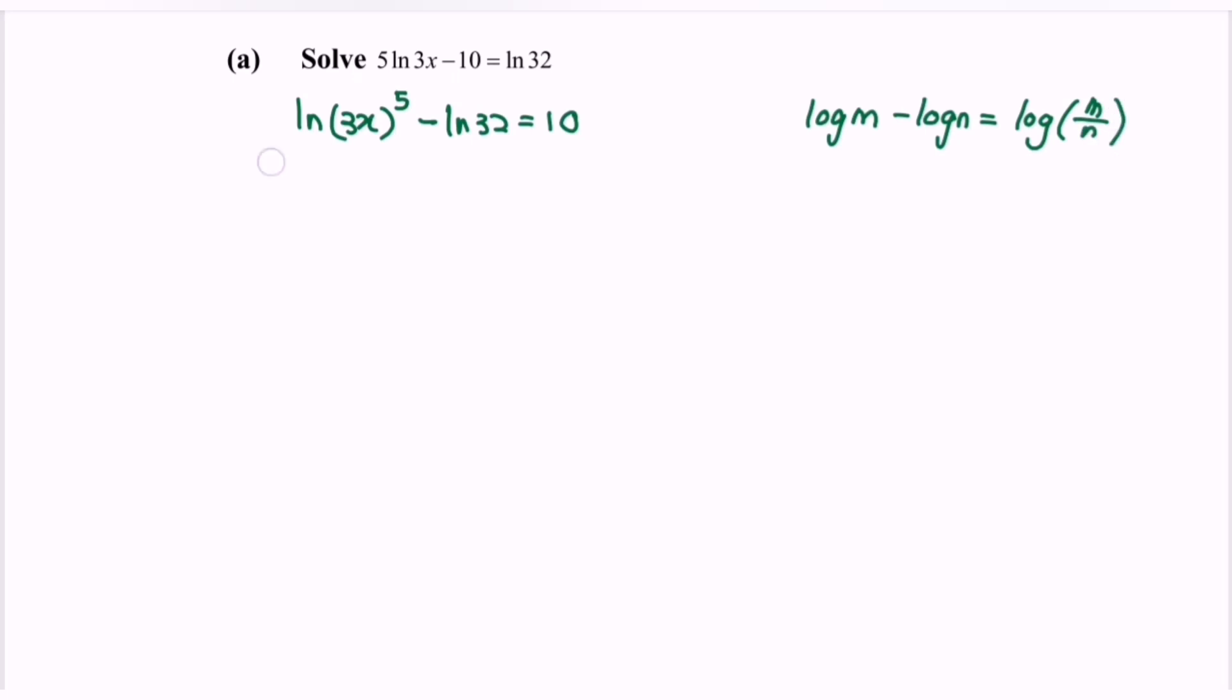For this case, we get ln((3x)^5 / 32) = 10.